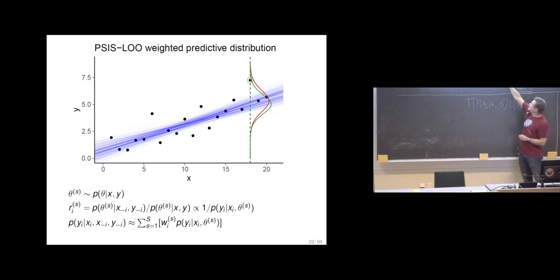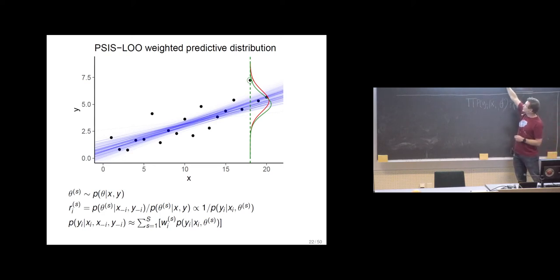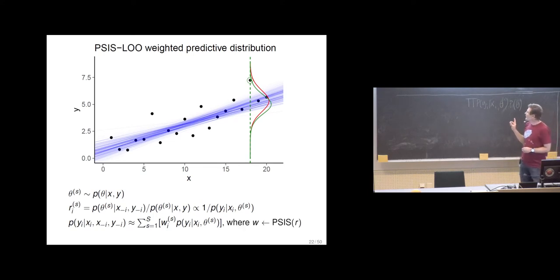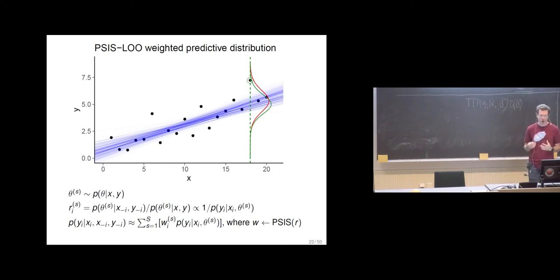We do Pareto smoothing for these raw importance ratios to turn them into weights. This will help stabilize this importance sampling. The likelihood predictive density values given those posterior draws are just weighted with the w's. Since these weights are normalized in a certain way, we don't need the 1/S factor at the beginning that we had for the empirical average when computing the posterior predictive densities.